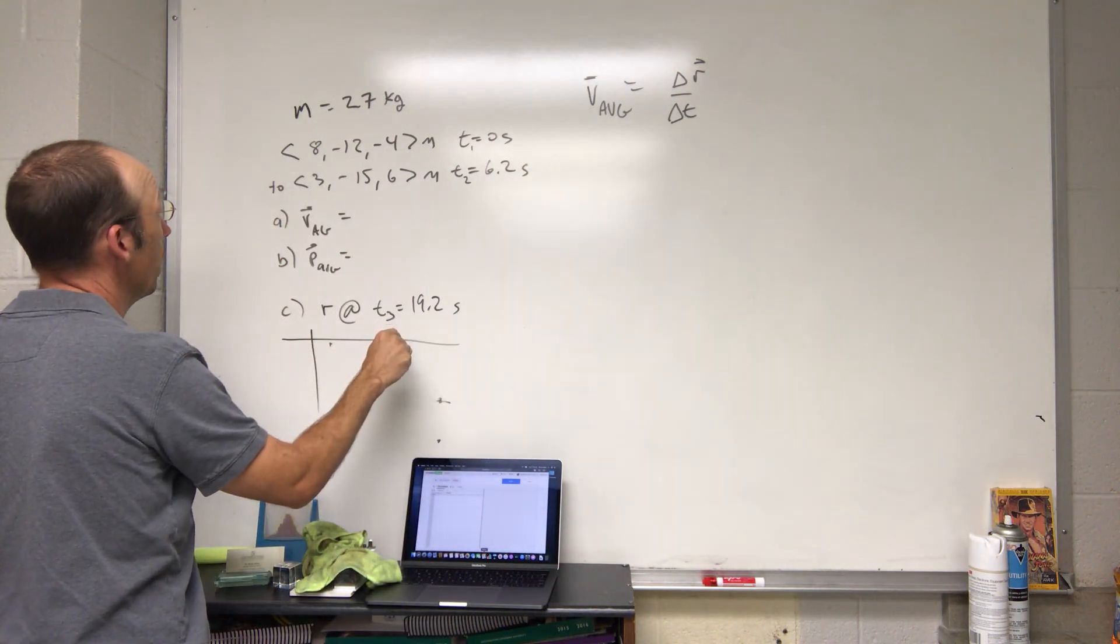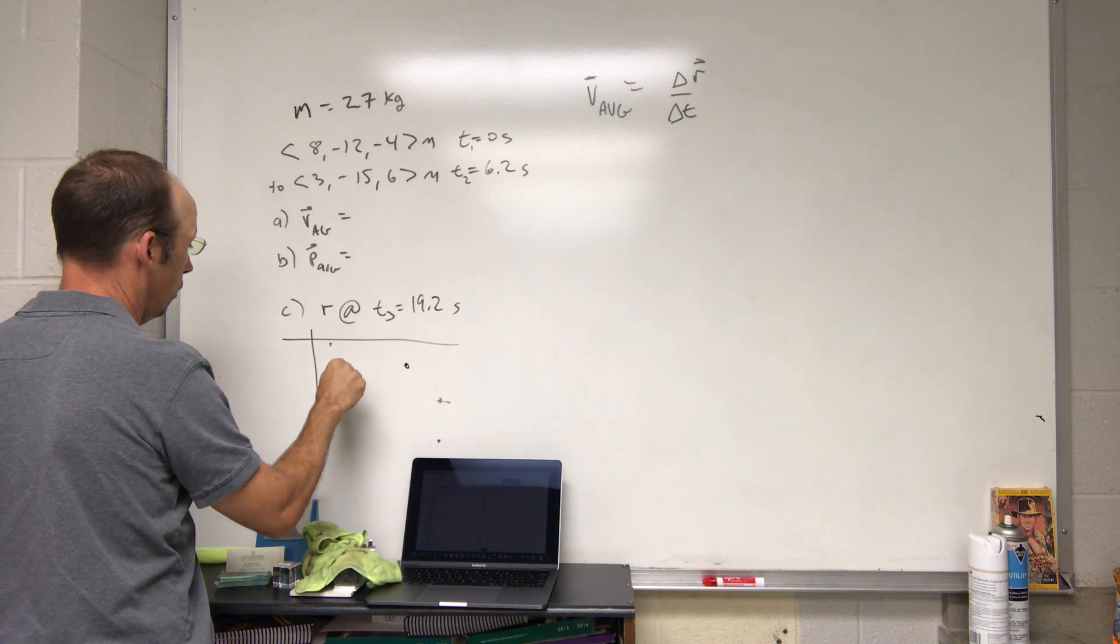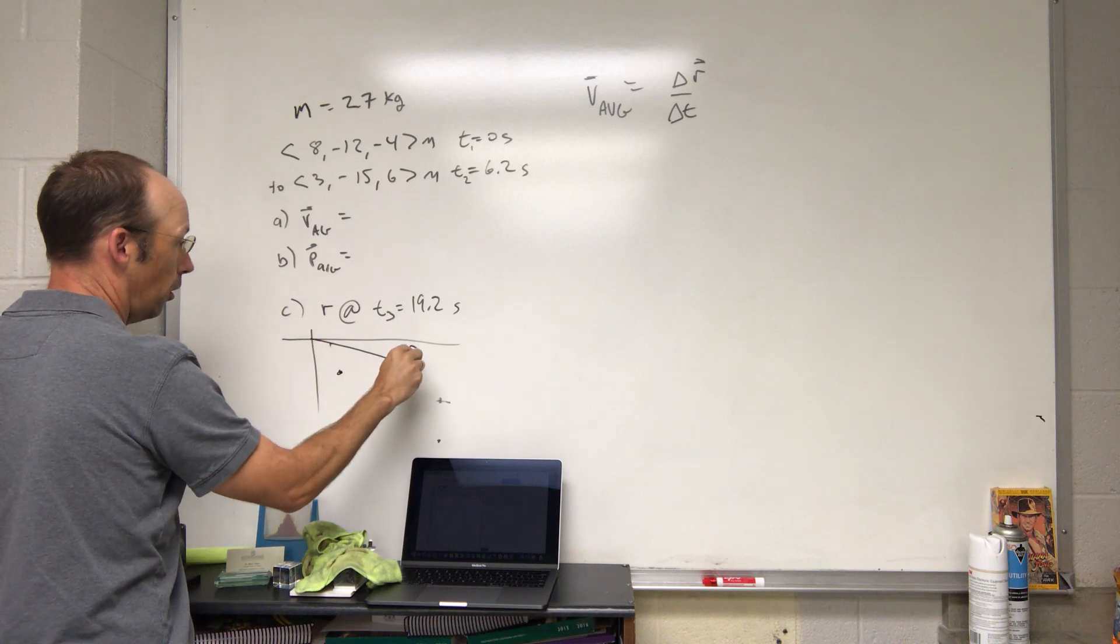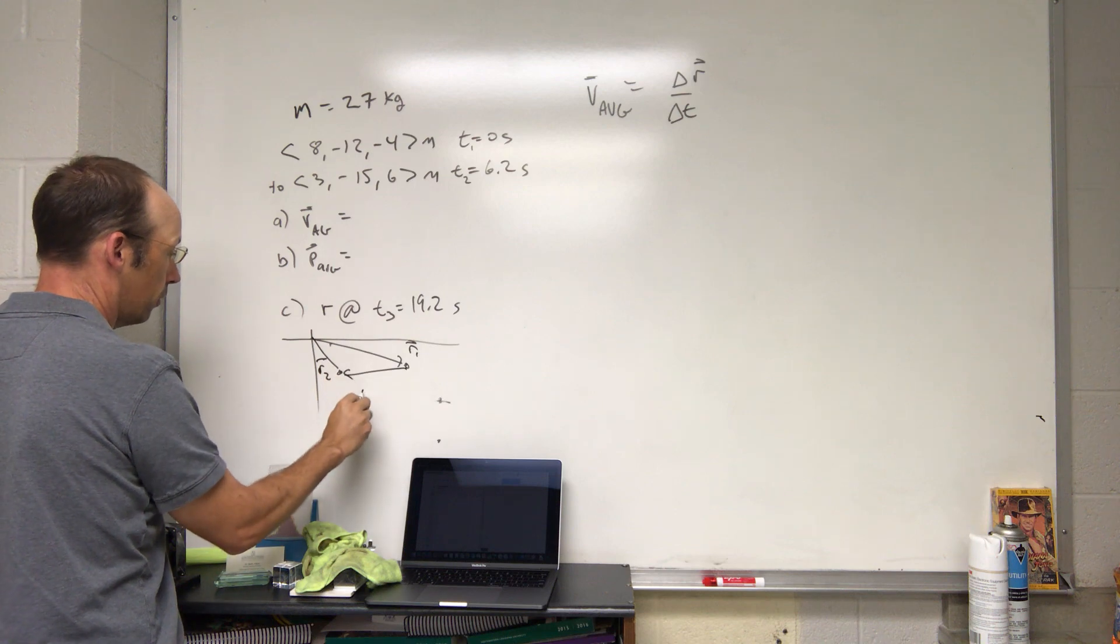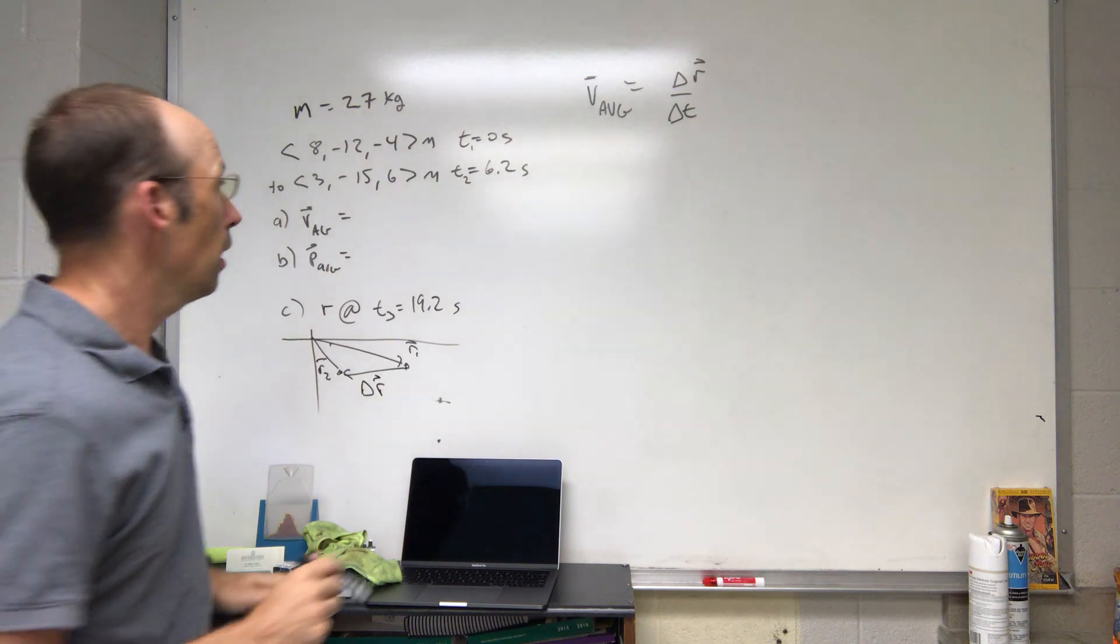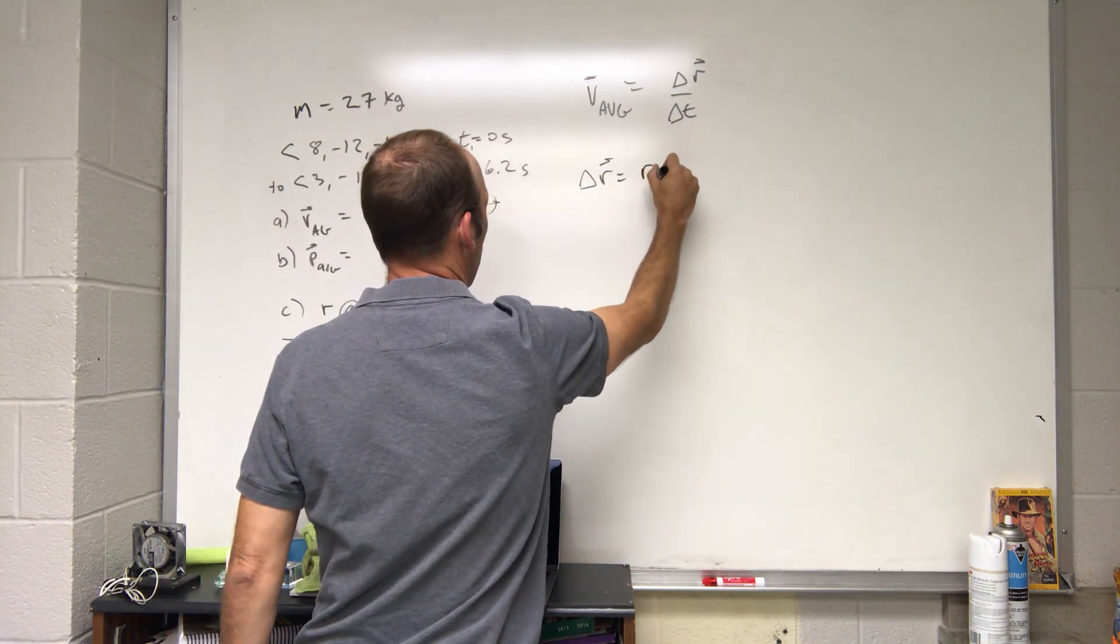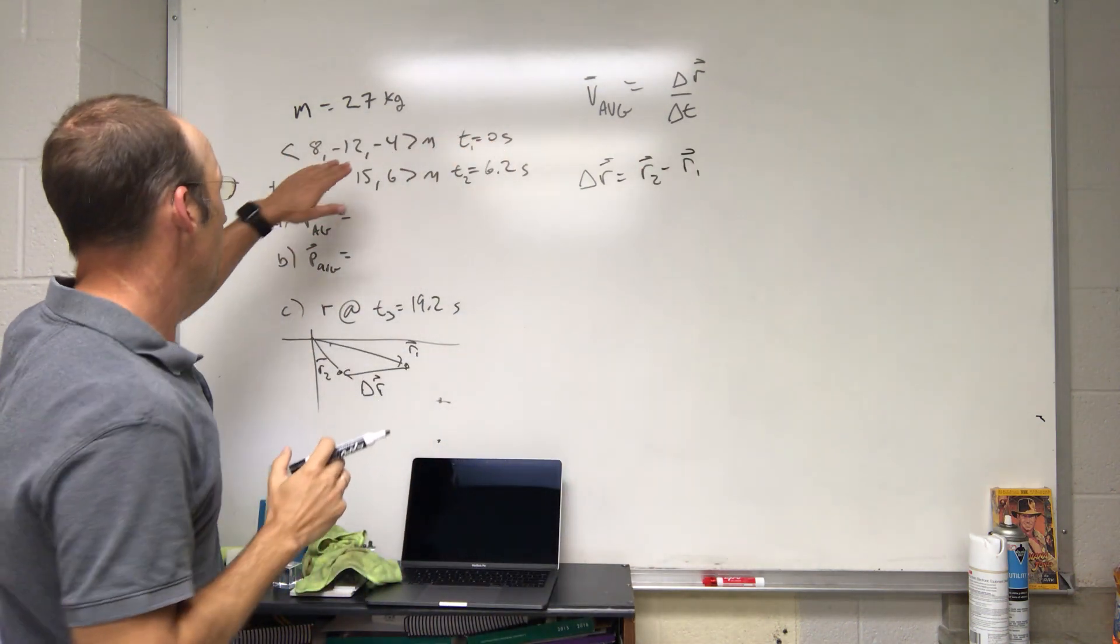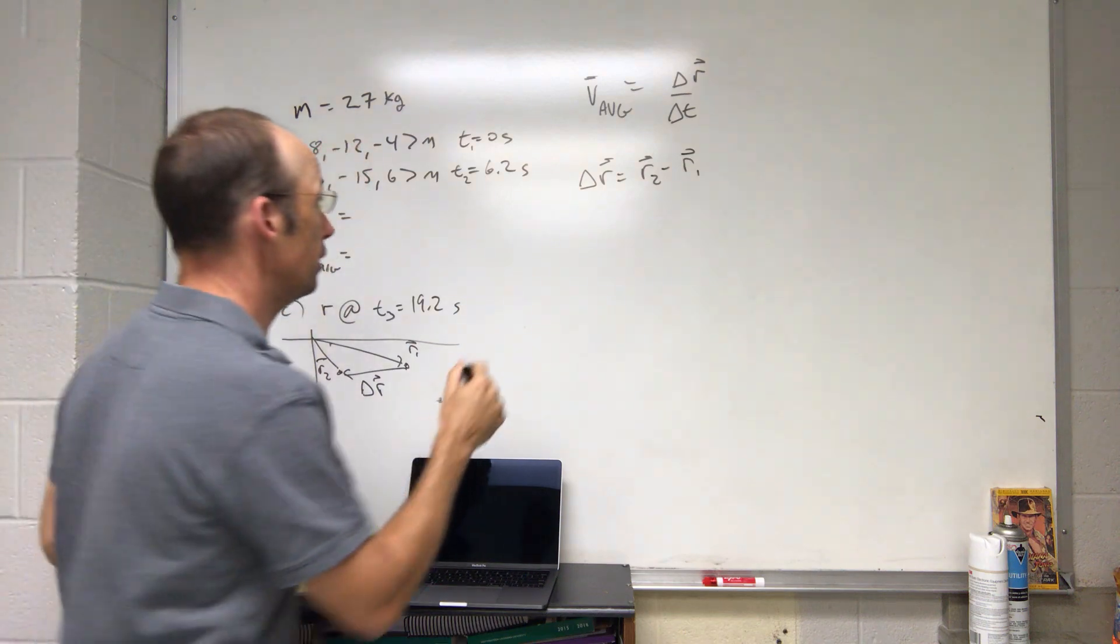Here's my origin. It starts right here and moves to over here. We'll call this vector r1 and this vector r2, and this vector is delta r. Can you see that? Okay, so delta r is going to be r2 minus r1, that's the displacement.